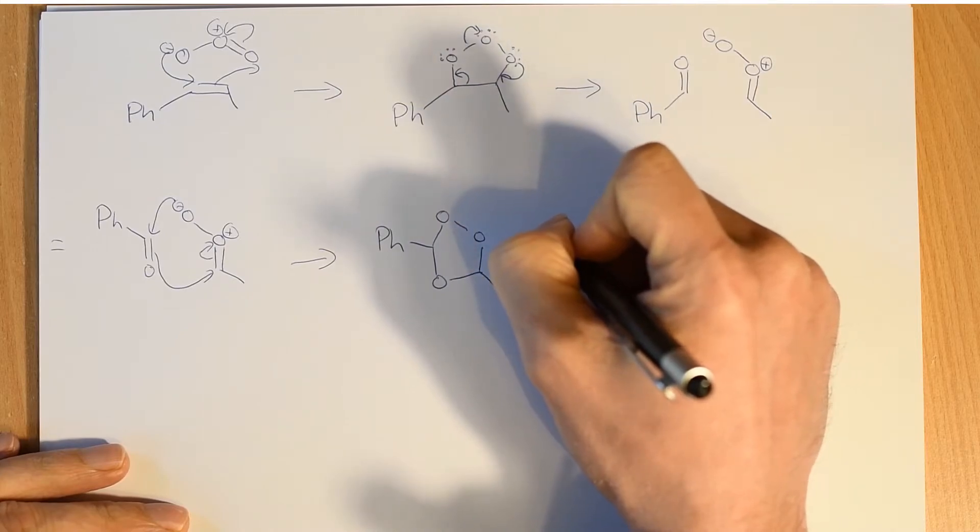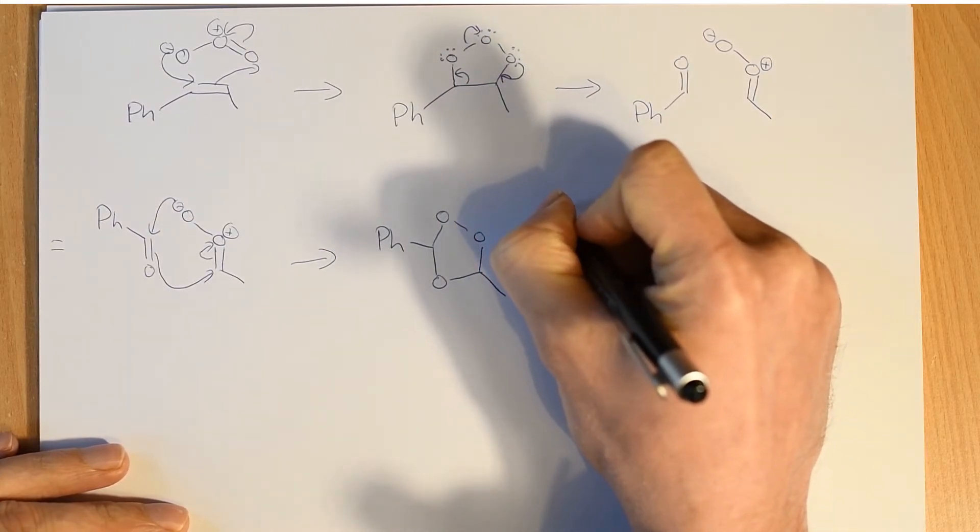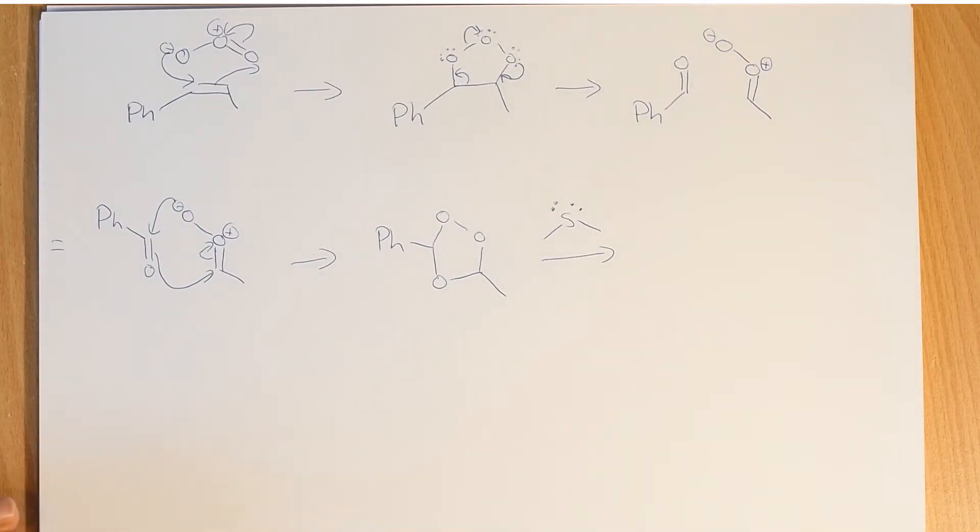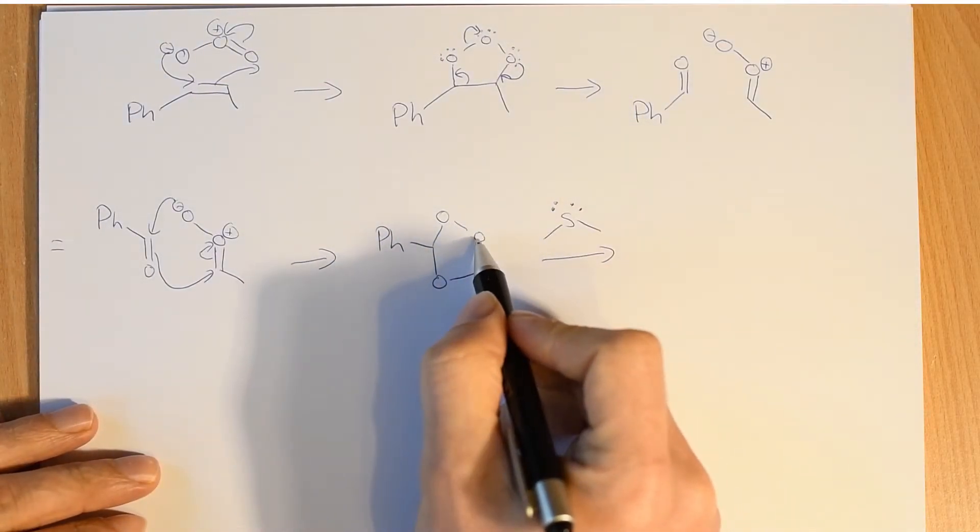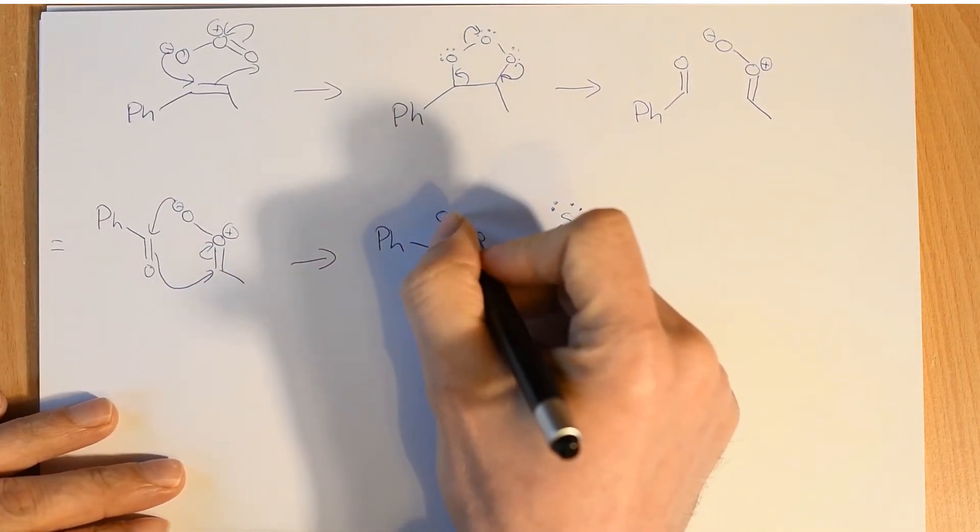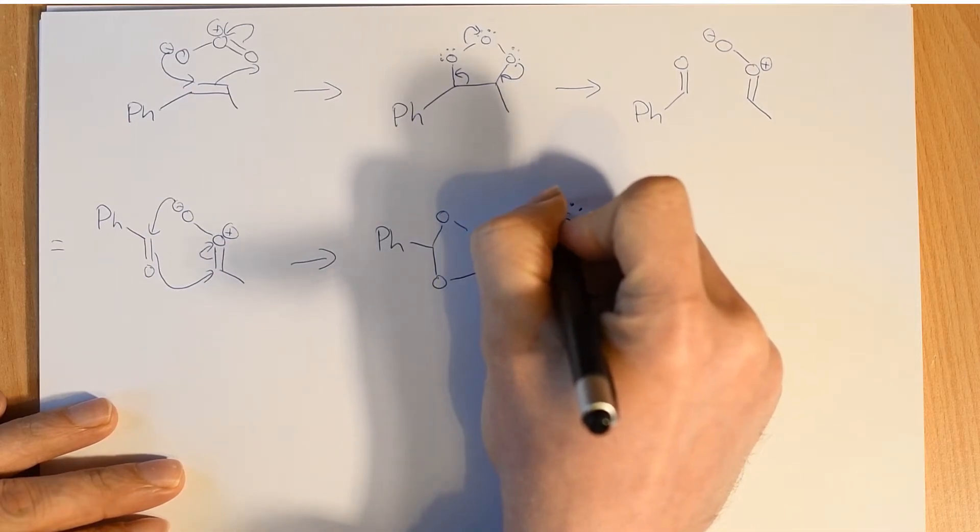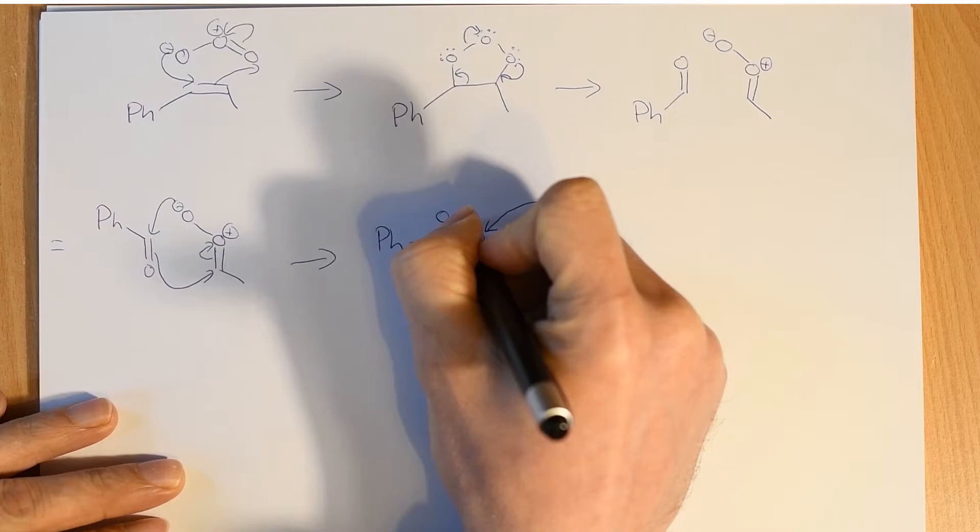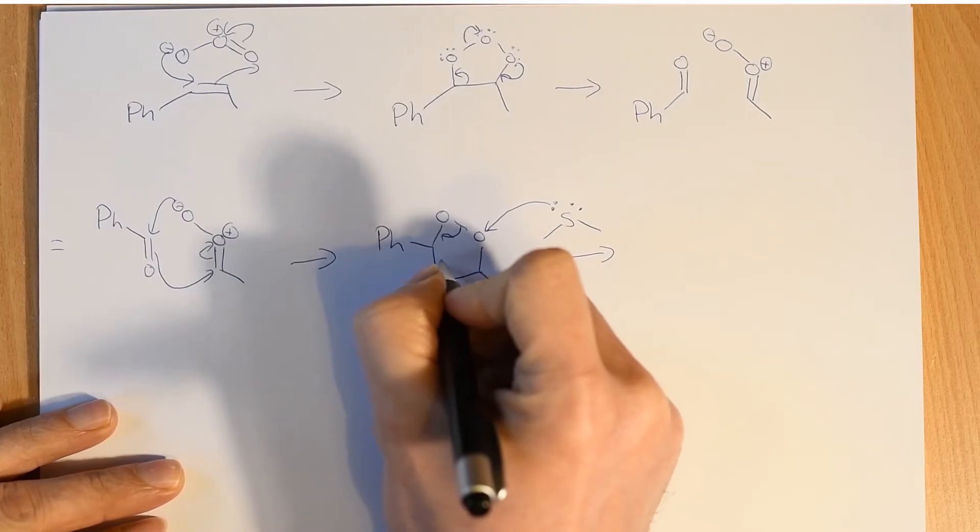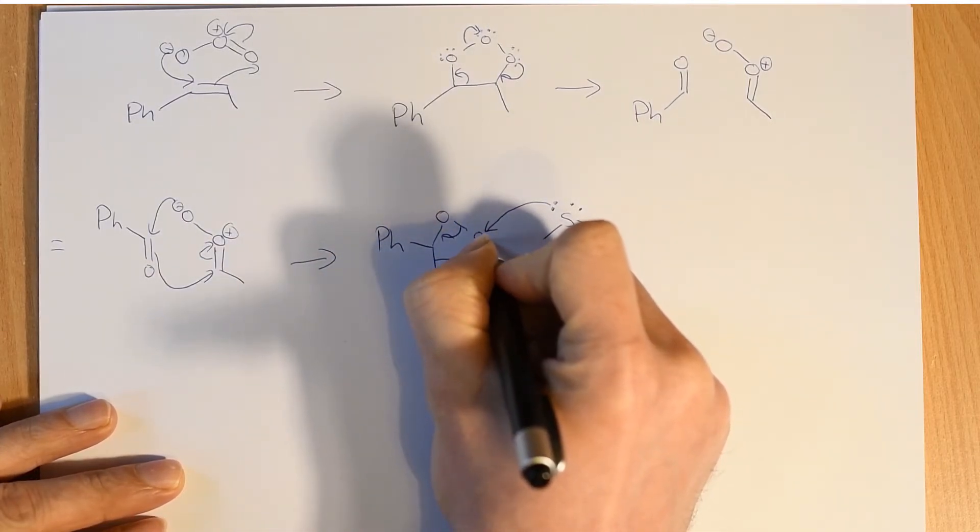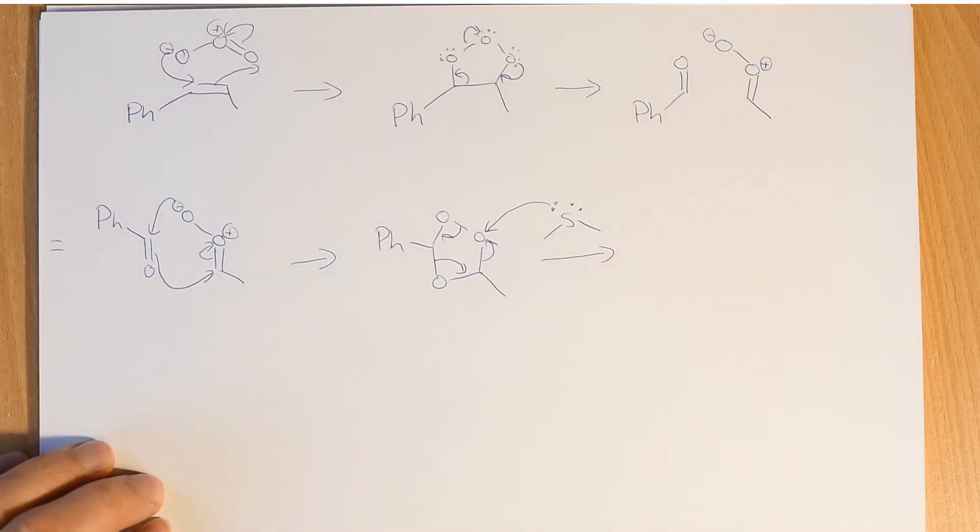So if we put in our dimethyl sulfide, sulfur group 6, two lone pairs on it, one of those lone pairs can attack an oxygen. And that's an unusual thing. You don't normally attack oxygens, but this oxygen has a bond to another oxygen. So we can attack this oxygen and move this pair of electrons into the carbon-oxygen double bond, make another carbon-oxygen double bond here, and then give that pair of electrons back to the oxygen.